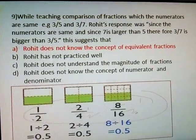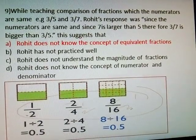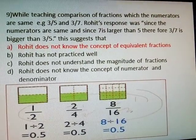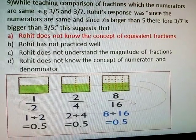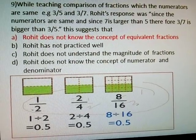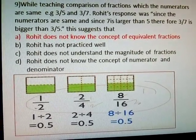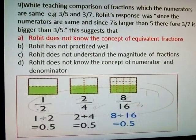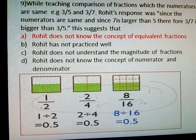While teaching comparison of fractions where numerators are the same — for example 3/5 and 3/7 — Rohit's response was: since the numerators are the same and 7 is larger than 5, 3/7 is bigger than 3/5. This suggests Answer A: Rohit does not know the concept of equivalent fractions.